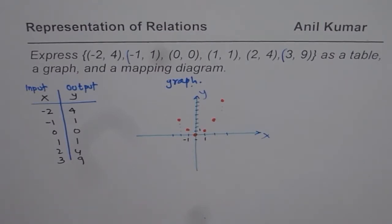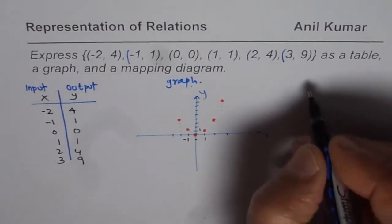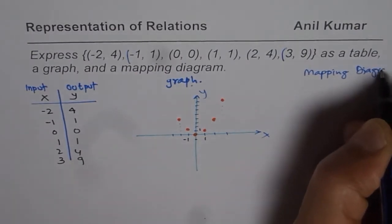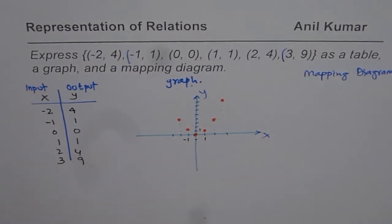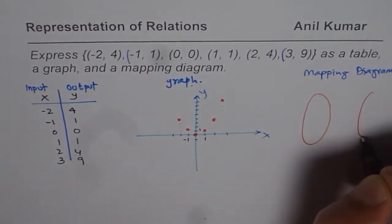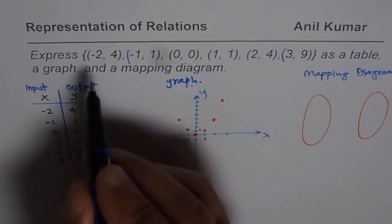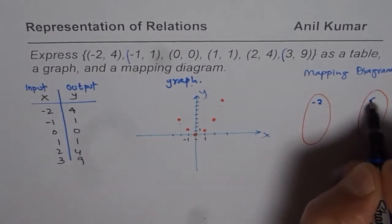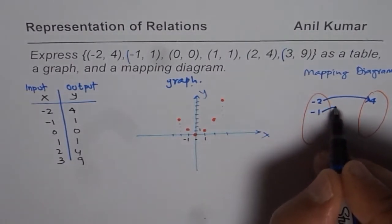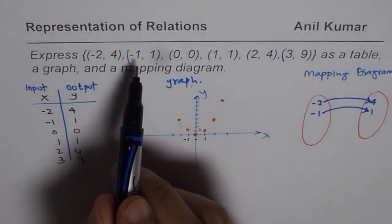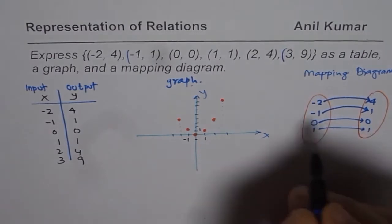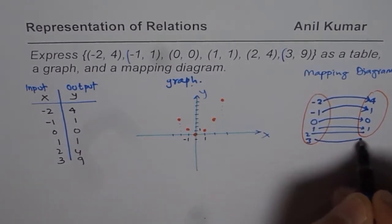Now let us see how to represent the same relation in the form of a mapping diagram. In a mapping diagram, we have two sets — one is called the input set and the other one is the output set. Each element in the input is mapped to the output using an arrow, going from independent to dependent. So minus two maps to four, minus one to one, zero to zero, one to one, two to four, and three to nine.